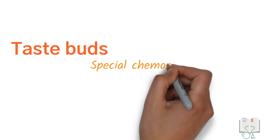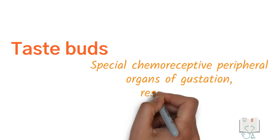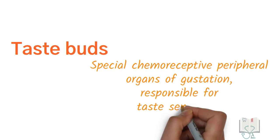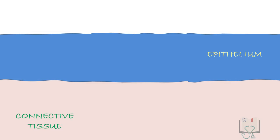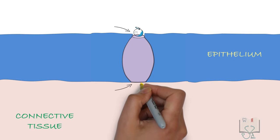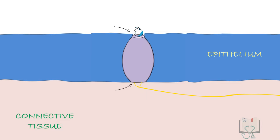Taste buds are special chemoreceptive peripheral organs of gustation responsible for taste sensation. They are located within the epithelium, extending from the surface exposed to the outer environment for stimulus, to the basal membrane in contact with nerves for conduction of signal.